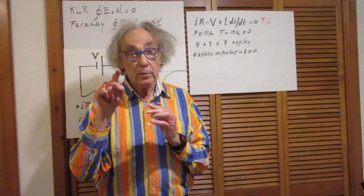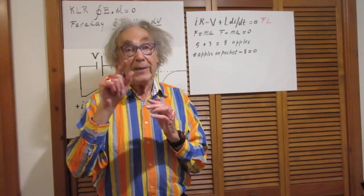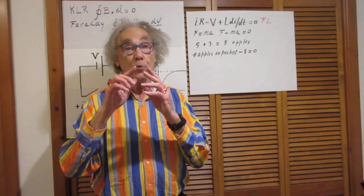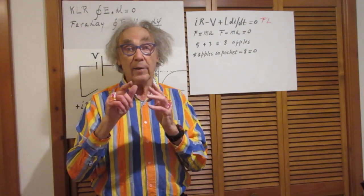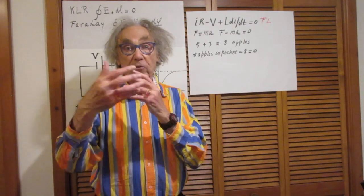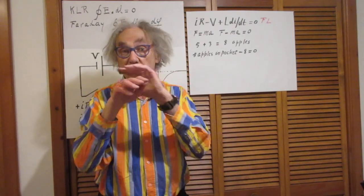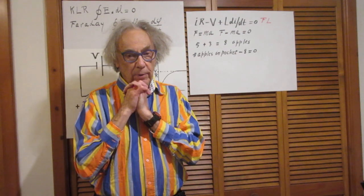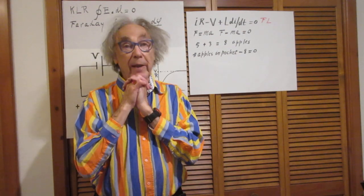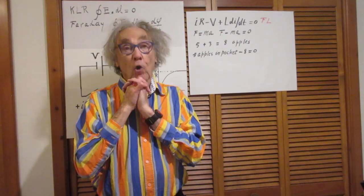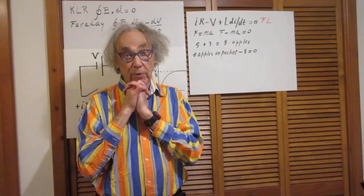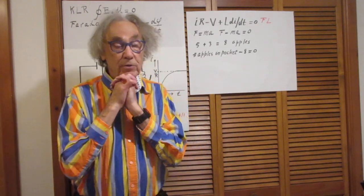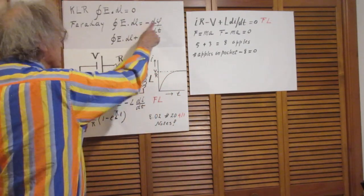If you have a closed loop, you attach to that closed loop an open surface. That could be flat, but it could also be like a paper bag which is open on one side and closed on the other. It's an open surface. And the magnetic flux through that surface which I just defined, if that is changing, then Faraday's law says that it is not zero.